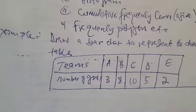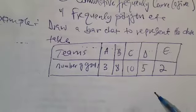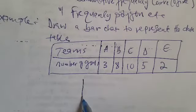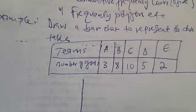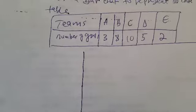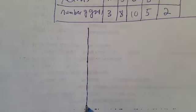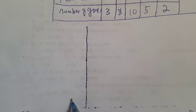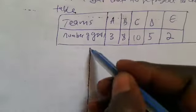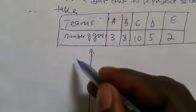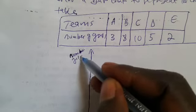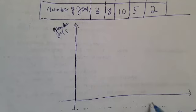So how can we represent a bar chart? We can represent a bar chart by drawing a vertical line like this, and we also draw a horizontal line like this. This vertical axis is the number of goals, and the horizontal axis is the teams.